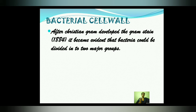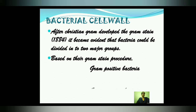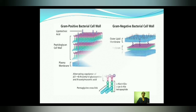Bacterial cell walls are classified after Christian Gram, who developed the Gram staining procedure — a practical staining procedure discovered in 1884. After this procedure, it became evident that bacteria could be divided into two major groups: Gram-positive bacteria and Gram-negative bacteria.